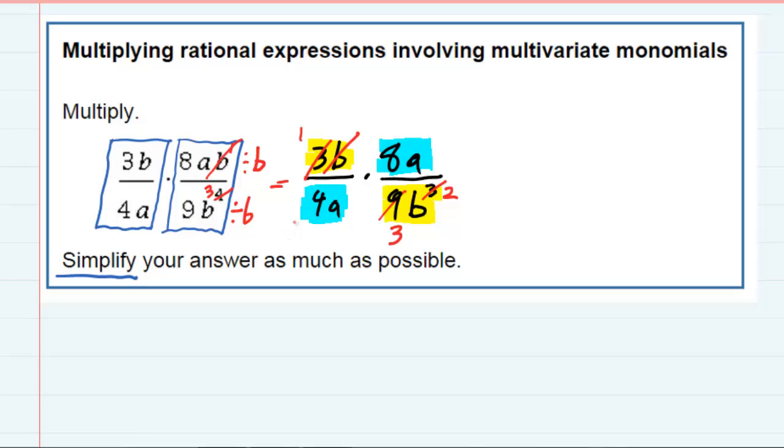And the 4 and the 8, those are both cancelable. I've got a 4 that goes into 4 one time, and 4 goes into 8 two times. So I've cross canceled those numbers. But then the A's, there is 1A in the bottom and 1A in the top, and those are going to cancel each other out. So A cancels A.